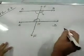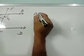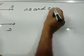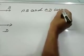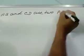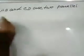Let us first write the statement. AB and CD are two parallel lines.